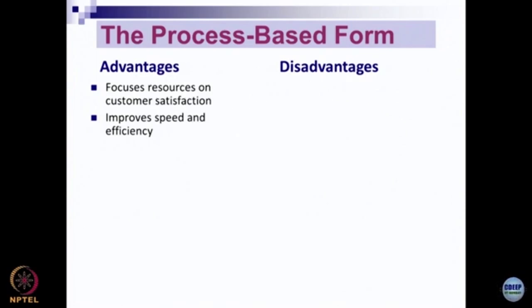One critical challenge in organization design is how to make people from different functions interact and not develop a silos mentality. The process-based structure addresses this challenge to a great extent. People from different functions and different types of expertise work together with the core objective of satisfying the customer, resulting in improvement in the speed and efficiency of delivering products or services.